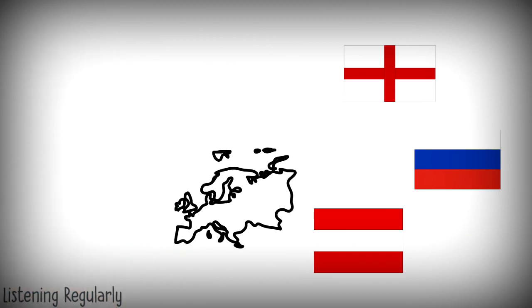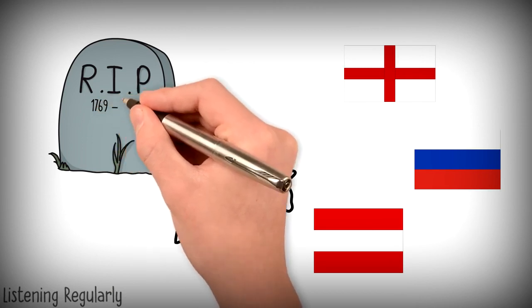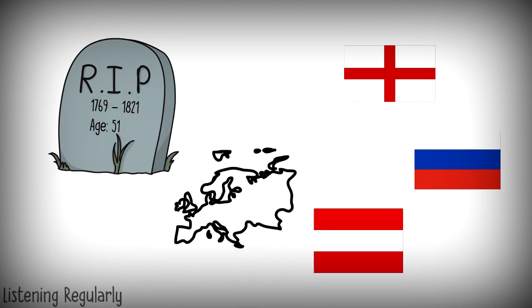In this military campaign against Russia, he lost most of his army. Napoleon, the great French conqueror, died alone, deserted by his family and friends in 1821. Napoleon was only 51 years old when he died.